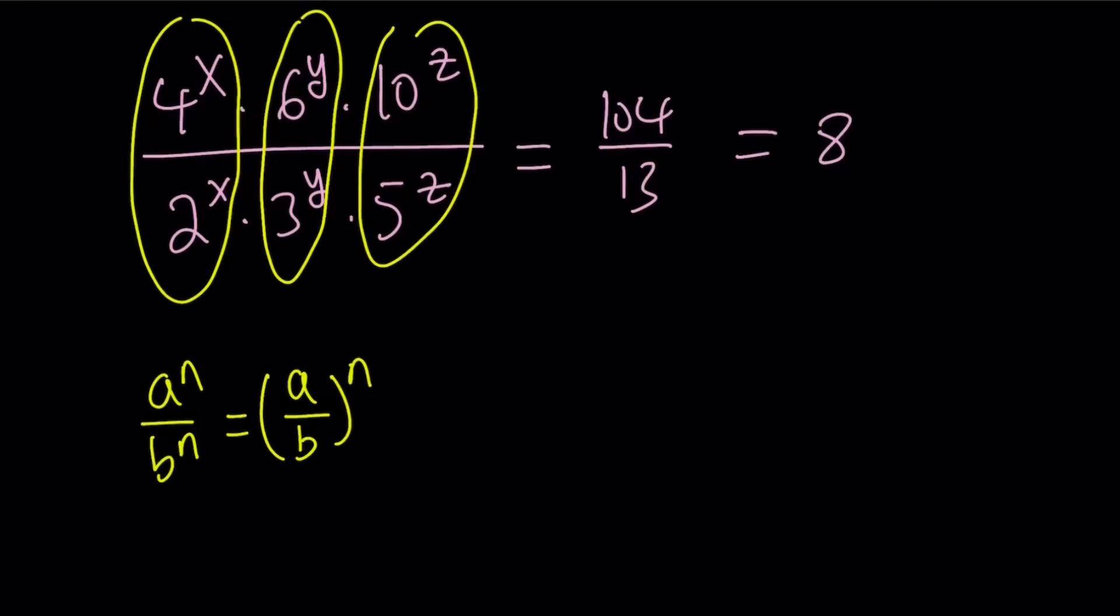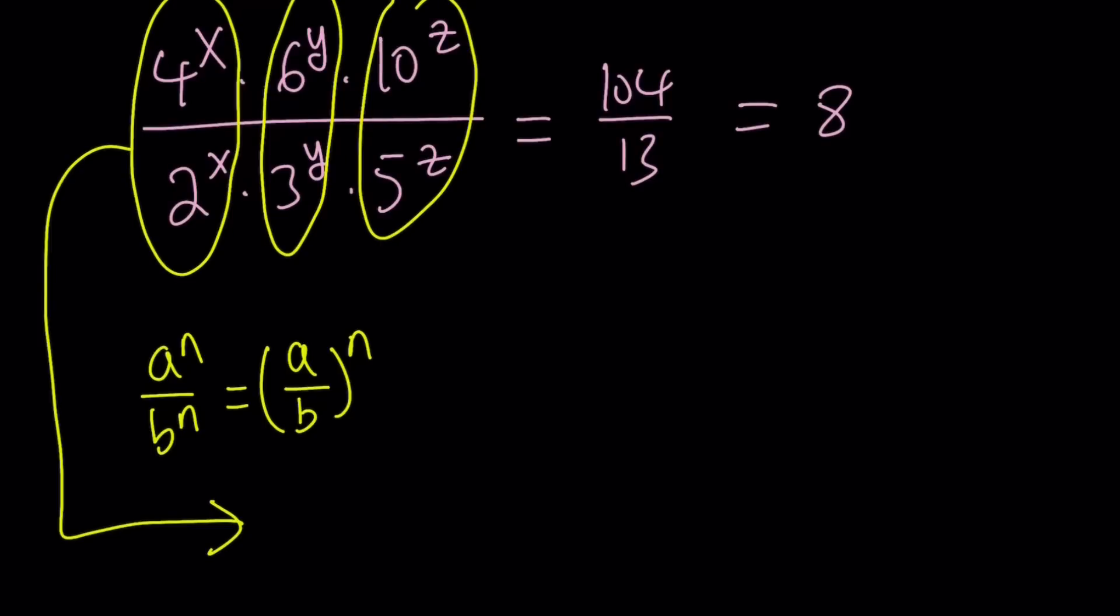Later on, I'm planning to make a video on exponential equations, expressions, and its rules and properties. Hopefully, I'll be able to make that when I get a chance. But anyways, we use that a lot. So 4 to the x divided by 2 to the x will become then 2 to the power x because 4 divided by 2 equals 2. Great.